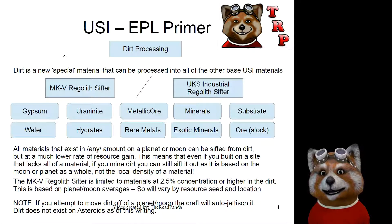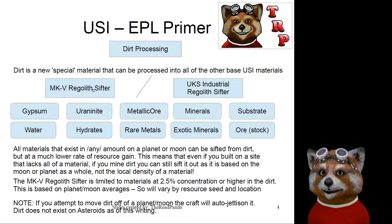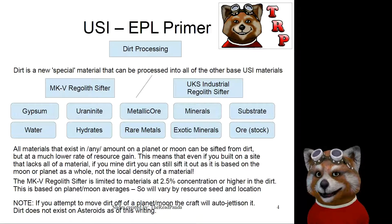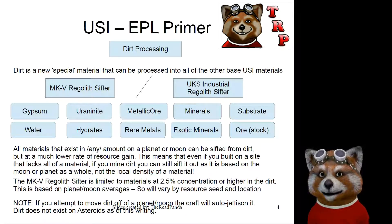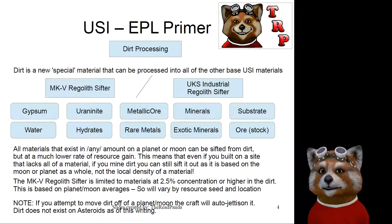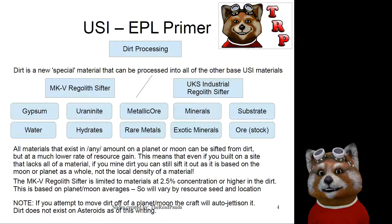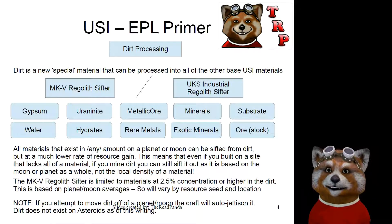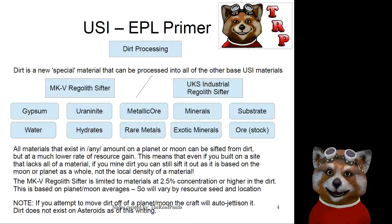Dirt is a relatively new special material that can be processed into basically all of the other USI materials. There are two ways to process it: the Mark V Regulus Sifter, which is a small attach-on side module, and the UKS Industrial Regulus Sifter, which is a really large part. That large part will be hard to get on-planet for most players — it's a mid-to-late stage colony piece. Most players will start with the Mark V because it's a very early colony piece. Any material that exists on a planet can be gained through sifting dirt if you're using the UKS Industrial Regulus Sifter. If you're using the Mark V Regulus Sifter, any material at a concentration of 2.5% or higher as a planetary average can be gained. If a material is at a 2.4% concentration across the entire planet, you're not going to be able to get it with the Mark V.